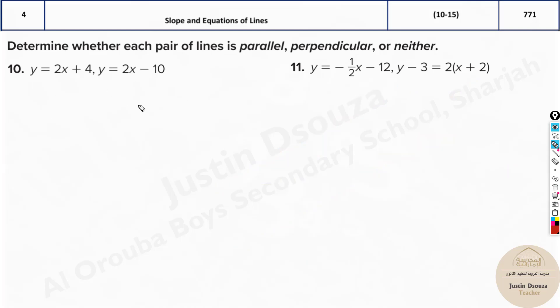So now, what you need to do is write them in slope-intercept form. It's y equals 2x plus 4. It's already in slope-intercept form. Over here, y equals 2x minus 10. Again, it's in slope-intercept form. Look at the slopes: 2 and 2. They're parallel. That's it. You don't have to solve anything. Just look at the slopes—they're parallel.